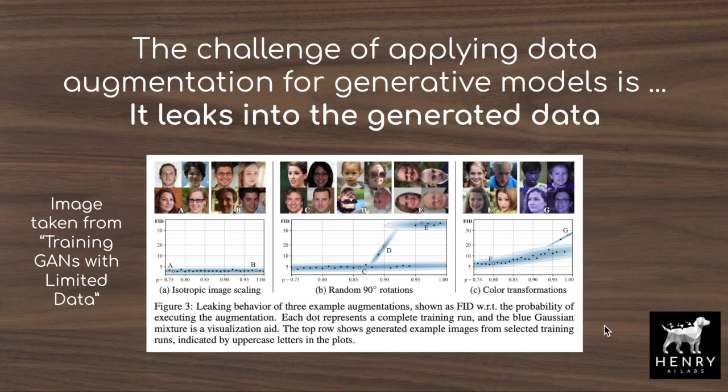It's very obvious how to apply data augmentation to supervised learning — you just augment the data, add it back to the training set, and treat it like any other training data point. It's also been pretty easy to apply in contrastive self-supervised learning, where you augment two views of an image and use those as the positive pairs. But applying data augmentation for generative models like GANs, autoregressive models, variational autoencoders, or flow-based models is a lot harder because these augmentations leak into the generated data distribution.